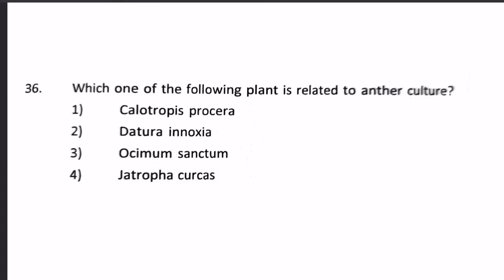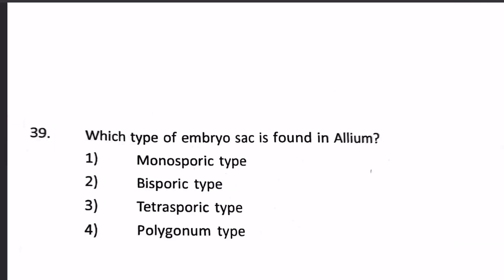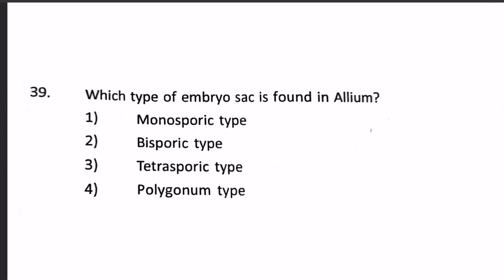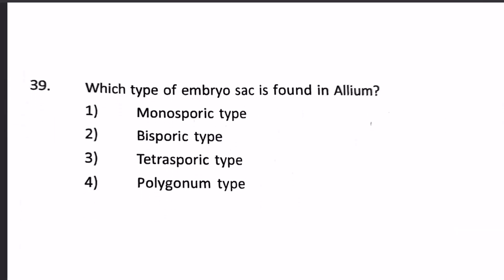Our answer is Datura innoxia. Next question: which type of embryo sac is found in Allium? Allium has a bisporic type of embryo sac development. So our answer will be 2.